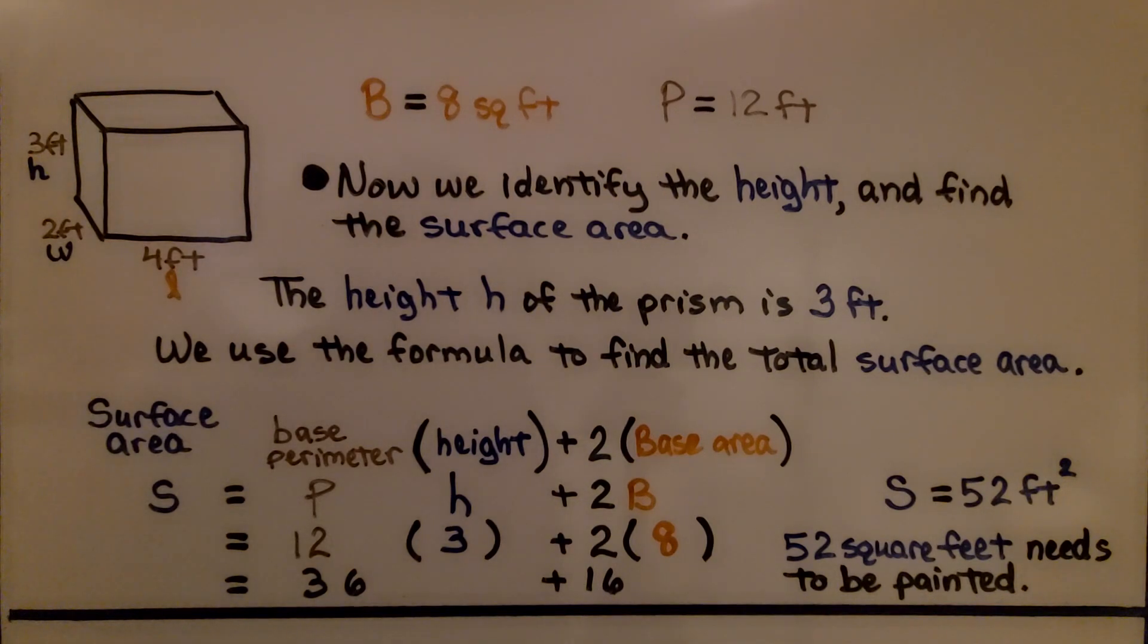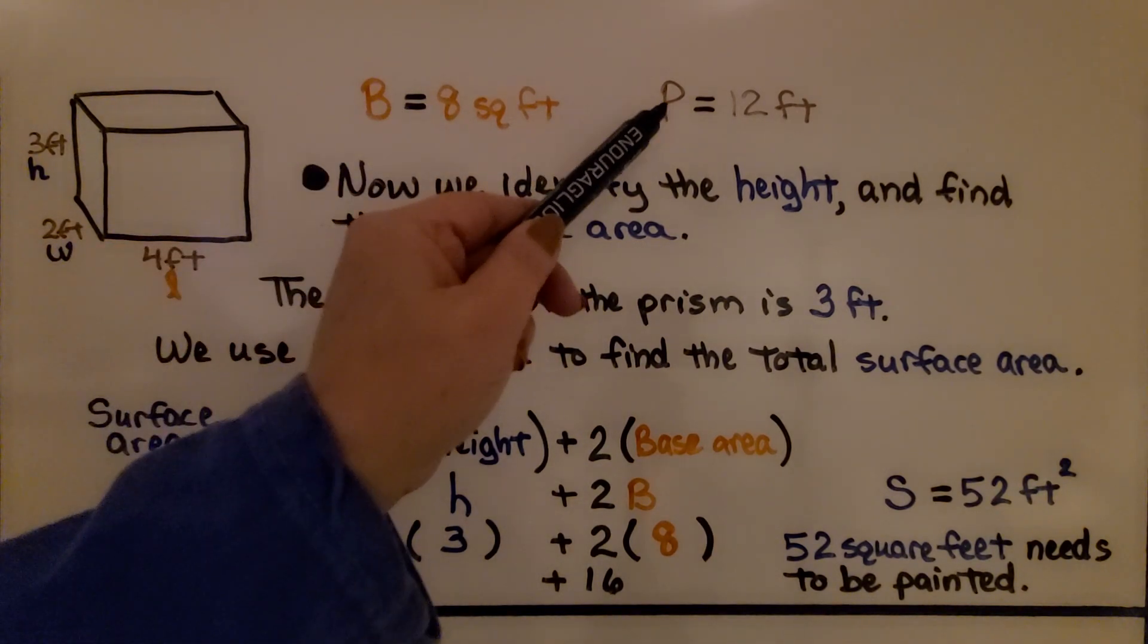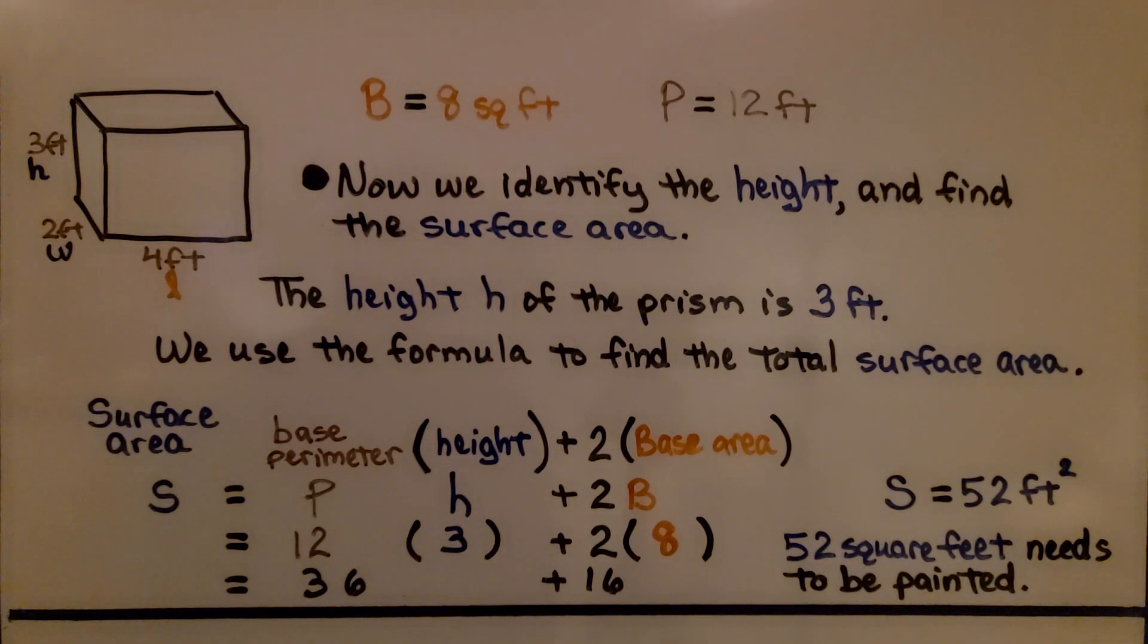Now we know the base area is 8 square feet and the perimeter of the base is 12 feet. Now we identify the height, which is 3 feet, and find the surface area. The height h of the prism is 3 feet. We use the formula to find the total surface area.